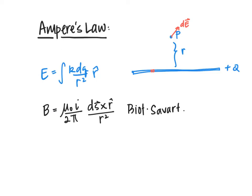This was for finding the magnetic field at a point somewhere away from the wire. If this was my current-carrying wire, here's a point P at a distance d from the wire, and we can find the magnitude of the magnetic field due to this current-carrying wire. So this current-carrying wire creates a magnetic field at point P.